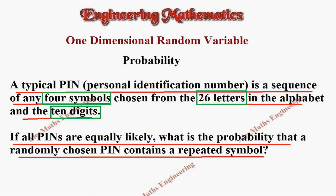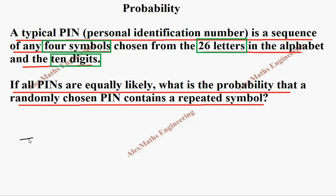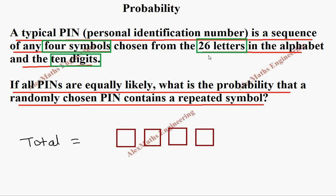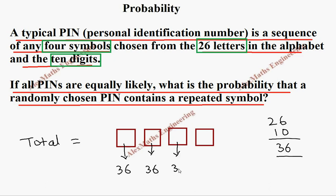First, we find the total possibilities. Since the PIN is made up of 4 characters, we make 4 boxes. We use 26 letters and 10 digits, so totally we have 36 elements. In the first box we have 36 chances — any digit from 1 to 10 or any of the 26 letters. Since we are counting total possibilities, elements can repeat, so each box also has 36 choices.